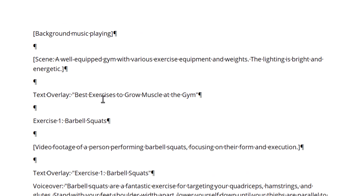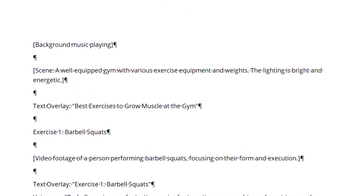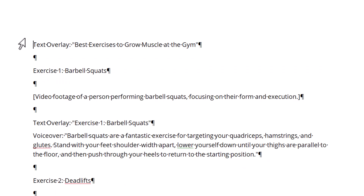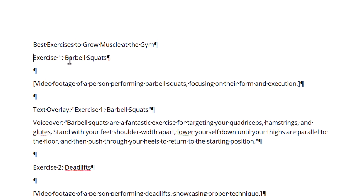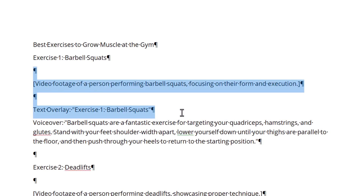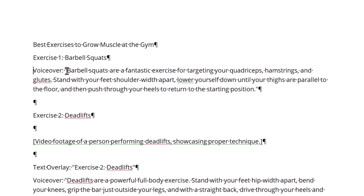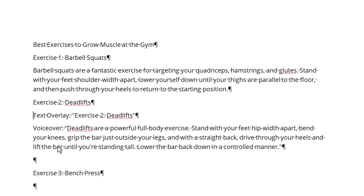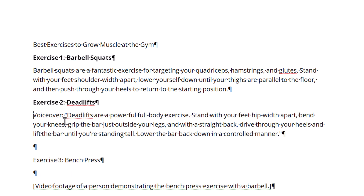I've pasted this into a word editor and I'm going to edit the text to suit what I need. It says here a scene with weights — I don't really care too much about the scene because InVideo is actually going to find a scene for us, or we can change it ourselves. So I'm going to delete that. Where it says 'text overlay' I'm going to remove that. Best exercises: grow muscle at the gym. Exercise one: barbell squats. Exercise two: deadlifts. I'm essentially going to remove any extra text and keep it as just the exercise names.